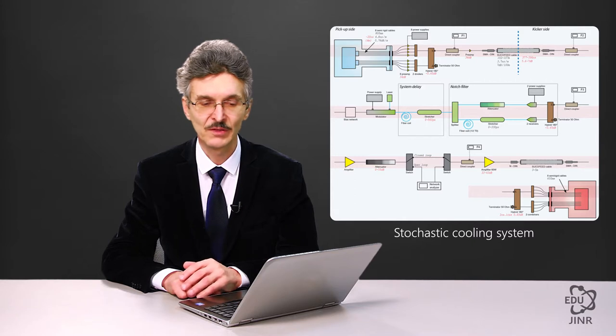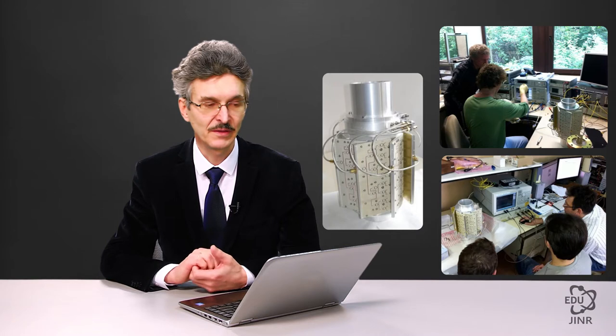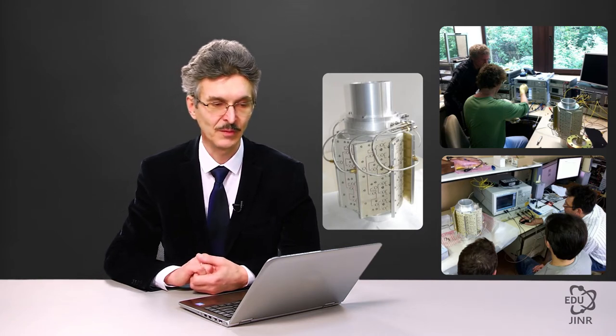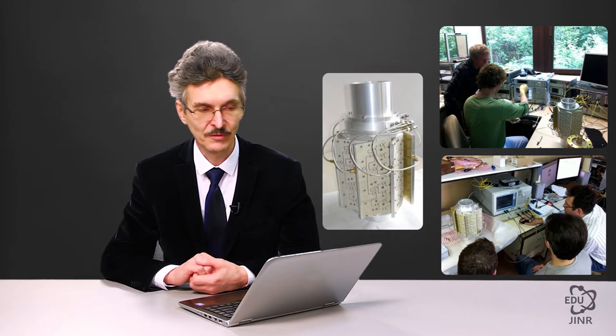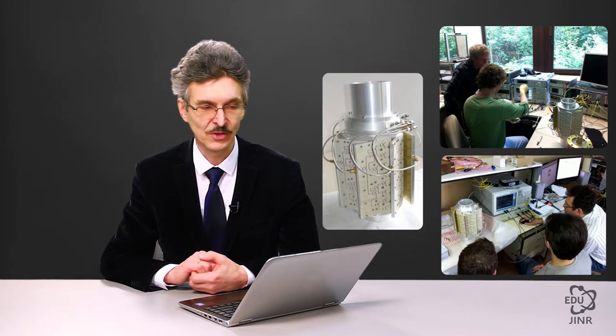Both the pickup and the kicker have approximately the same structure. The stochastic cooling system at the Nucleotron was built in cooperation with the Jullich Research Center in Germany. The pictures demonstrate this technical assembly. The equipment is about 40 cm in length and costs around 50,000 euros, the same price as a very nice car.